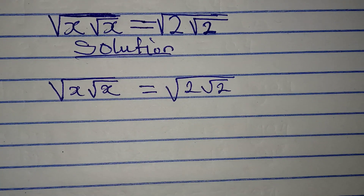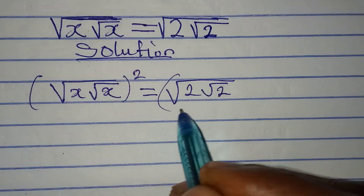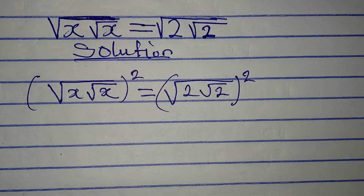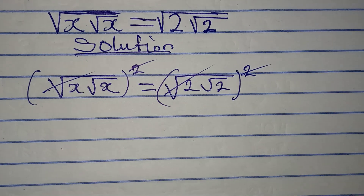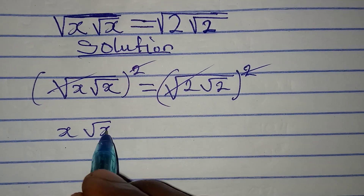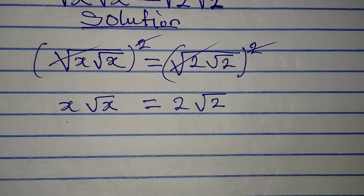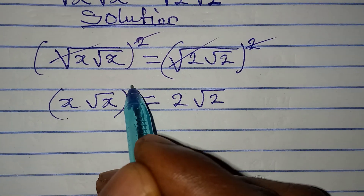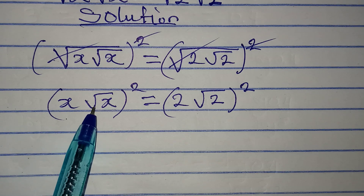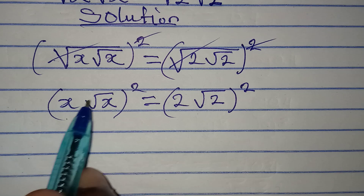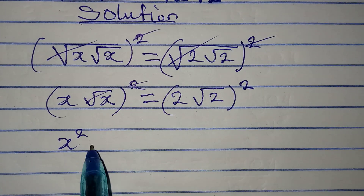The first thing we are going to do is to remove the square root. Whatever you do on both sides will not change the equation, so the square roots cancel on each side. Now we have x times the square root of x equals 2 times the square root of 2. The next step is to square both sides again to remove the remaining square root. This square will affect the x as well, so we get x squared, and the square and square root cancel.